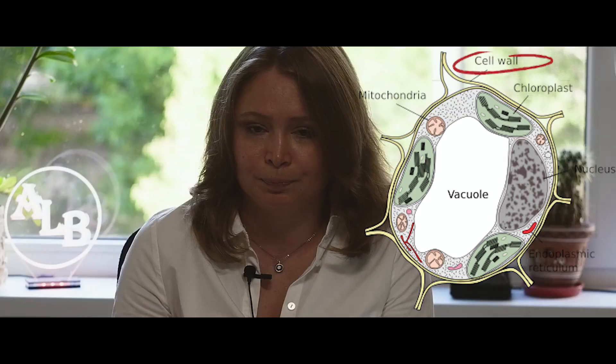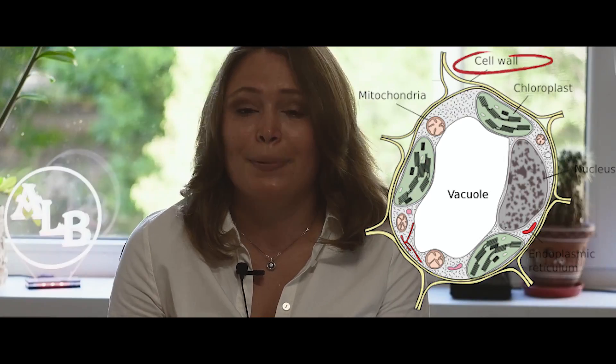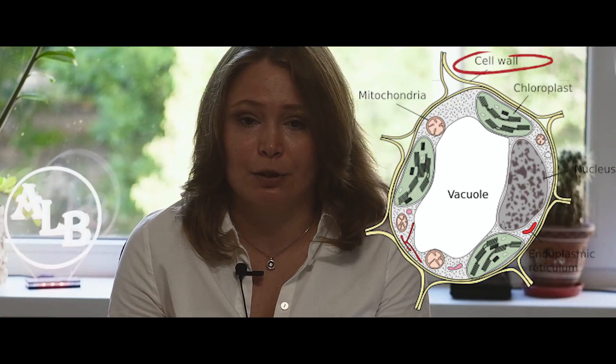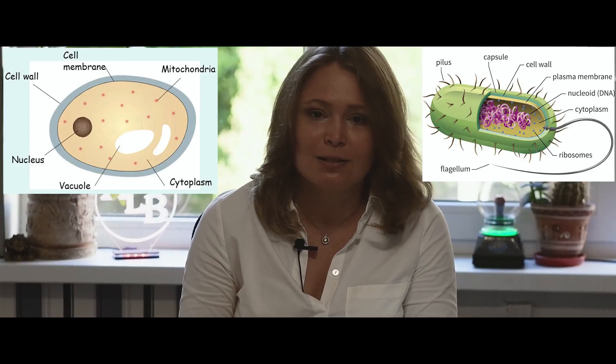The plasma lemma also contains receptors, so it can react to stimuli. Some organisms have an additional membrane above the cell membrane — it is called the cell wall. Plants have it made from cellulose, fungi have one made from chitin, and bacteria have one made from murein.